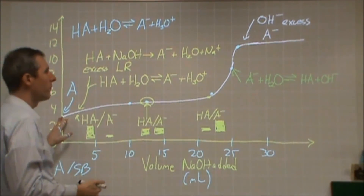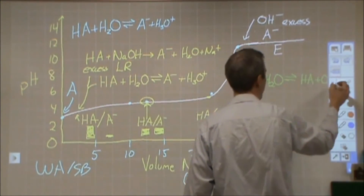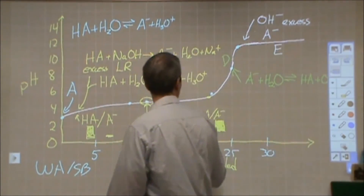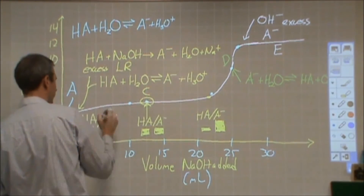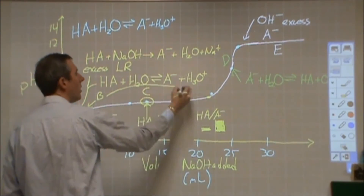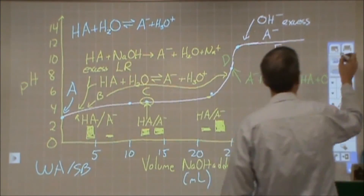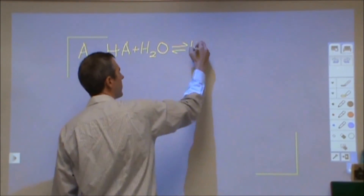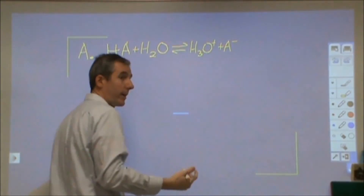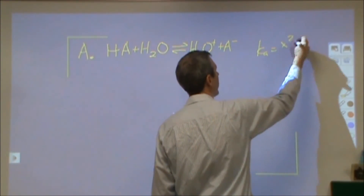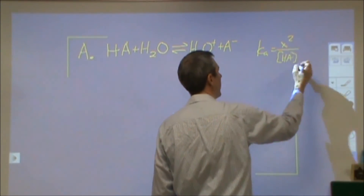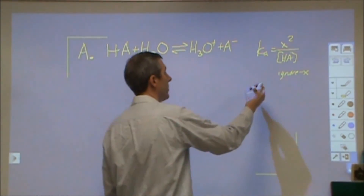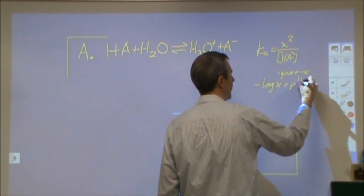So let's label the curve: point E is somewhere after the equivalence point, point D is the equivalence point, point C is the half-equivalence point, and region B extends from just after point A up to just before point D. At region A, we have weak acid and water only — equilibrium analysis, producing H₃O⁺ and A⁻. For the calculation, Ka equals X squared over the initial concentration (ignoring minus X from the ICE term). Solve for X; the negative log of X gives you pH.